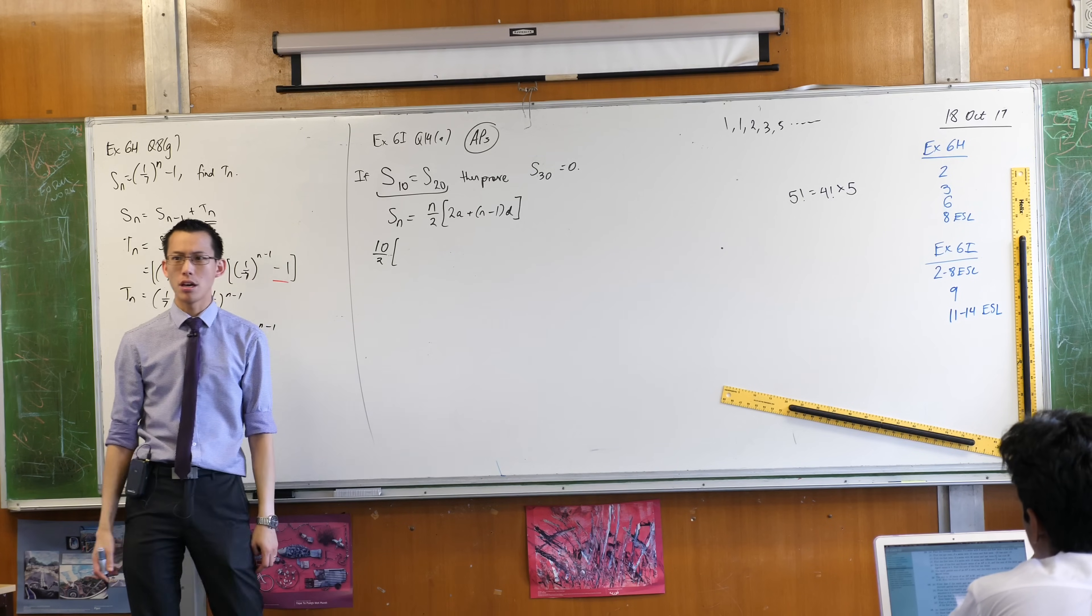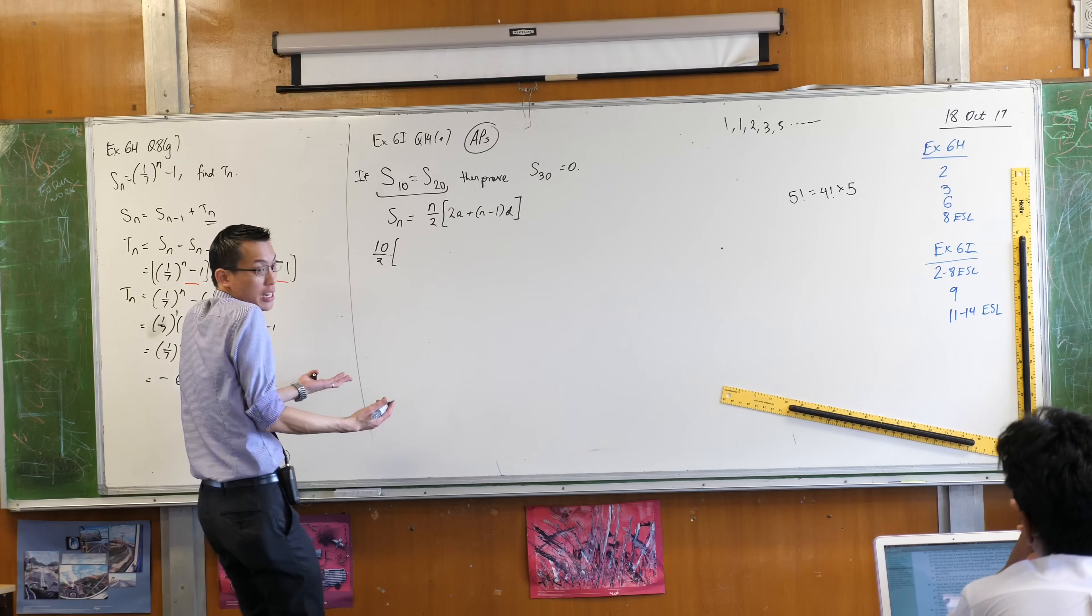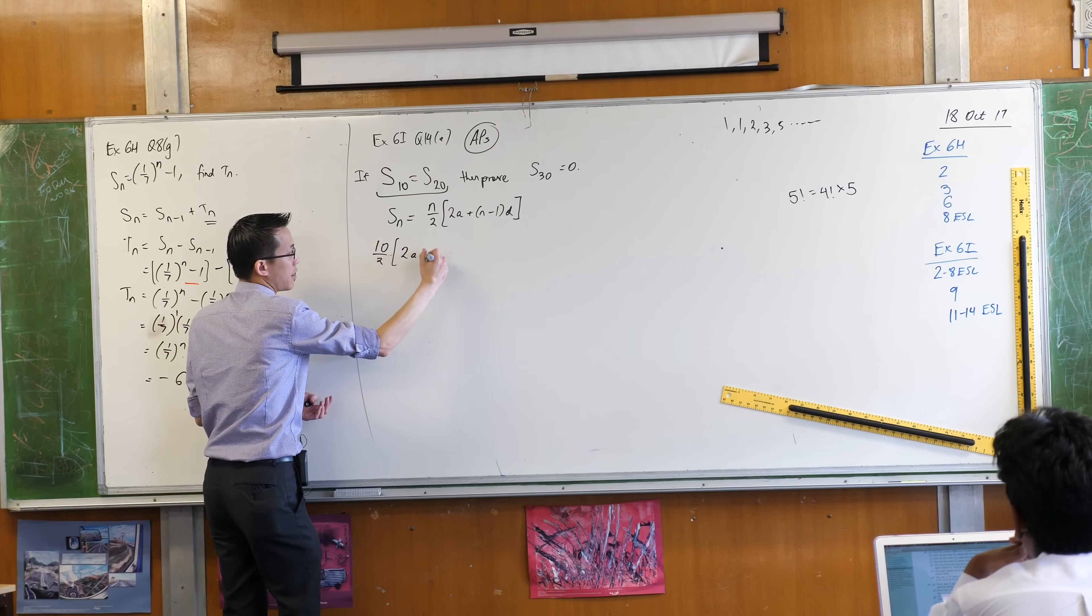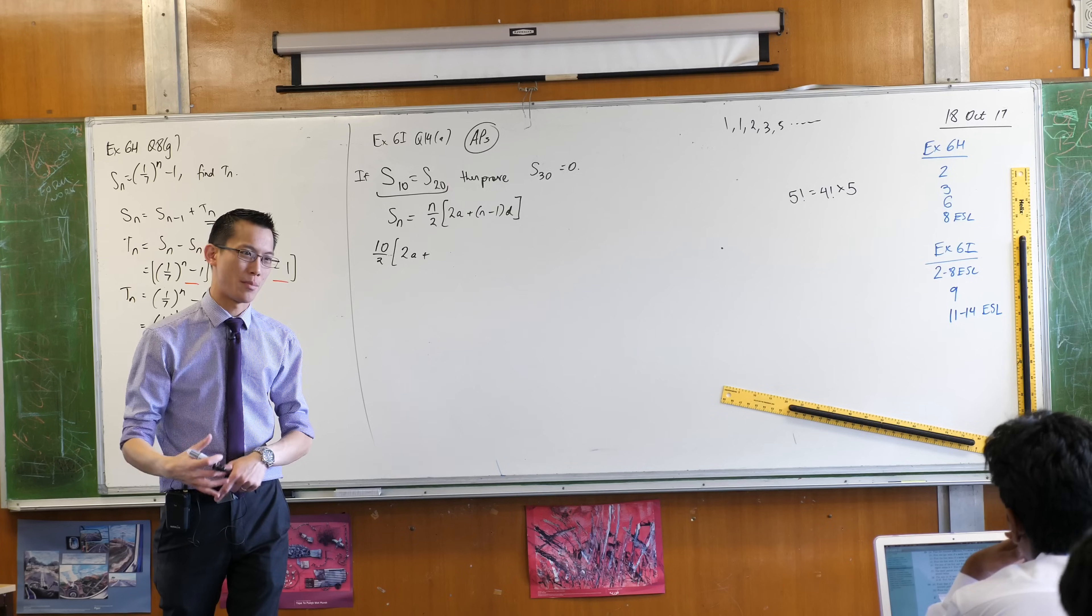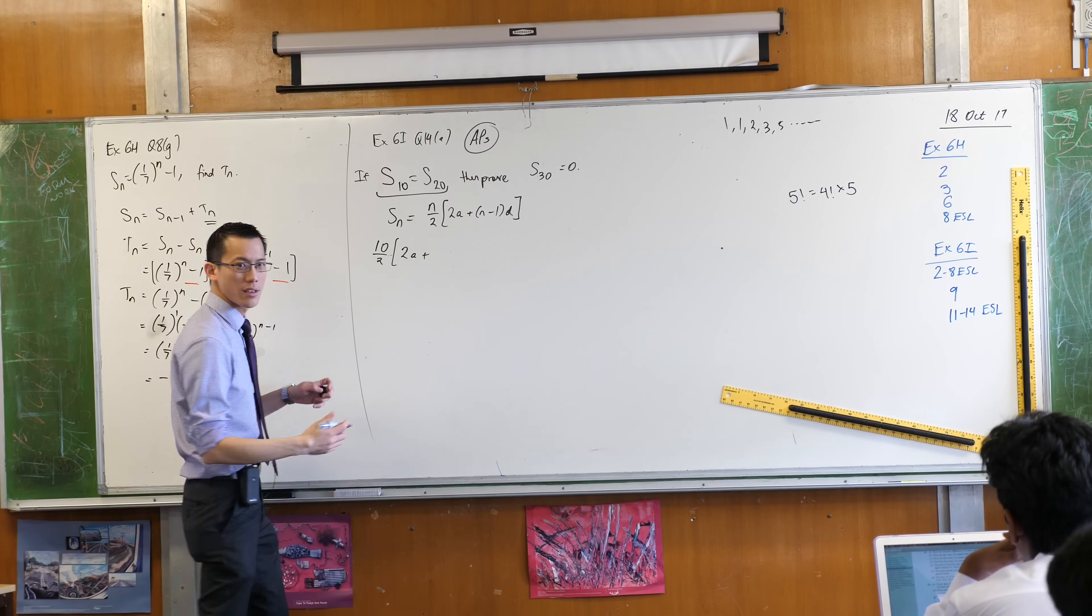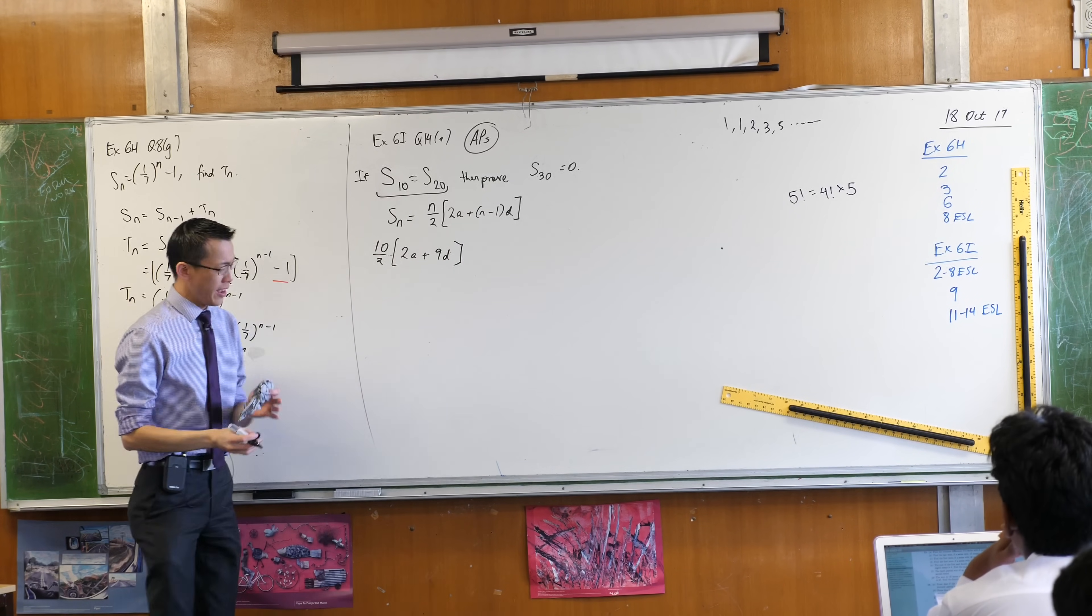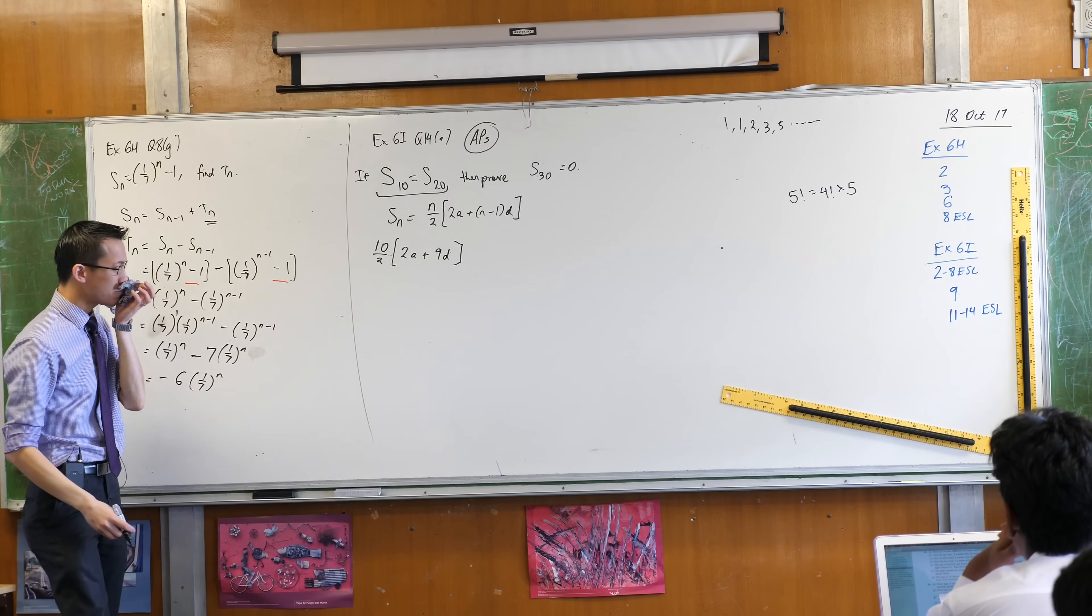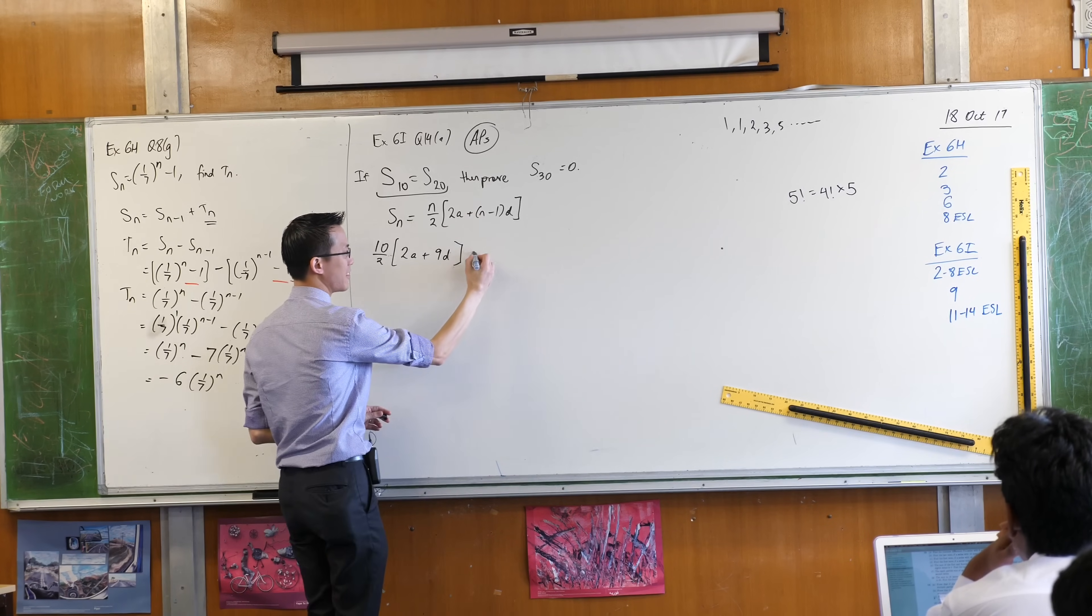Now, do I know what the first term is? Does the question tell you? So this could be anything, right? So I'm just going to have to leave it as 2a. But I do know what n minus 1 is because I know which partial sum I'm dealing with. So what do I write next? Nine lots. Excuse me. Thank you. Nine lots of the common difference and that's it. That's the whole formula.